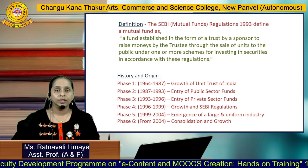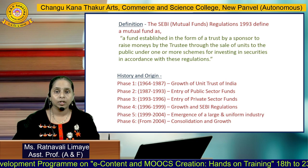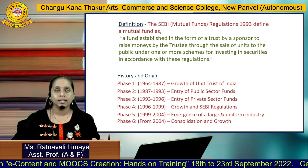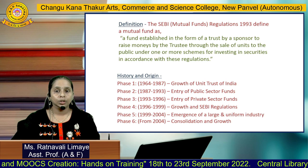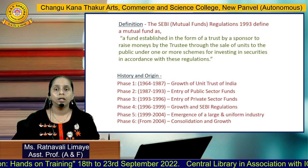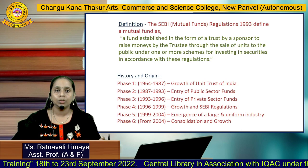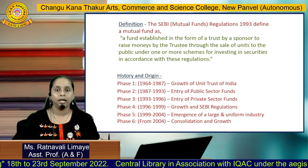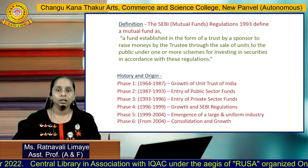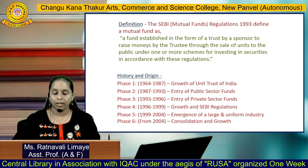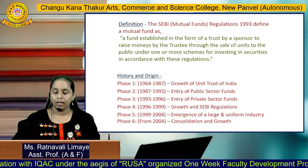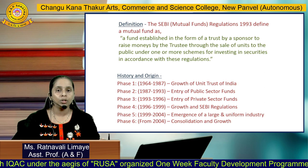After the establishment of UTI, it started collecting funds in small amounts from the people and in return gave units to those unit holders. The concept gradually became popular, and people started learning more about UTI and investment in mutual funds, and gradually began investing in UTI units. In this first phase, up to the year 1987, there was complete monopoly of UTI.